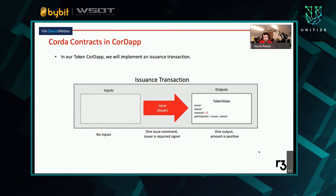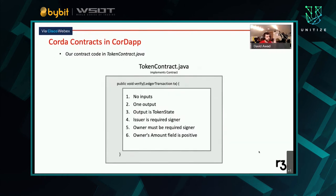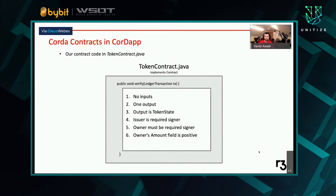One other note on input states: there is not always an input state. In our case, we are creating something — issuing a new object. The token state we are creating will not consume an input state — we're just doing this for simplicity. The majority of use cases do consume an input state, and we have plenty of examples online. This is an issuance transaction, and our contract code is going to implement a verify method that takes a ledger transaction and verifies: no input states, only one output state of type TokenState, the issuer is a required signer, the owner is a required signer, and the amount field is positive.